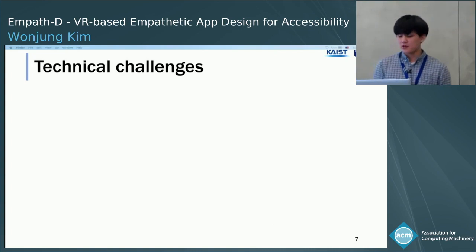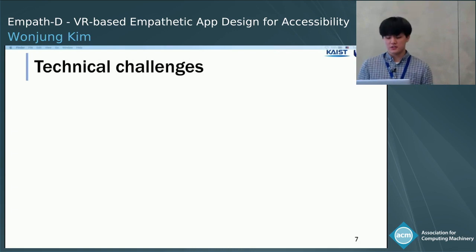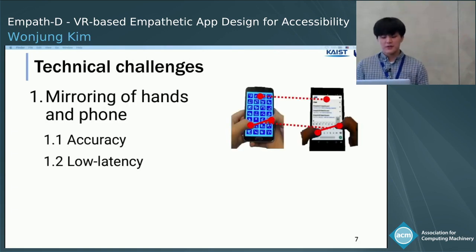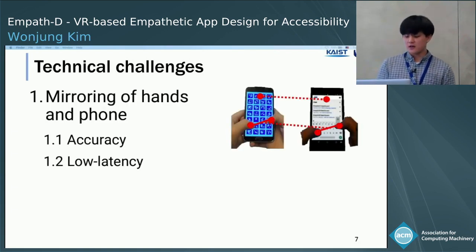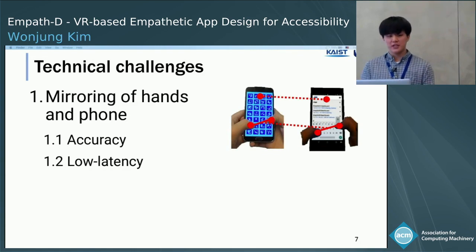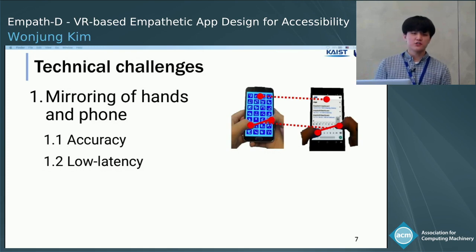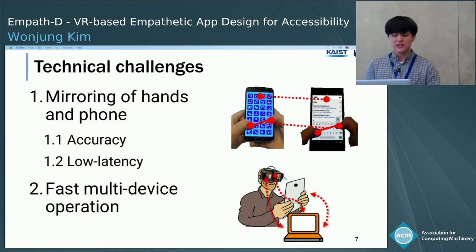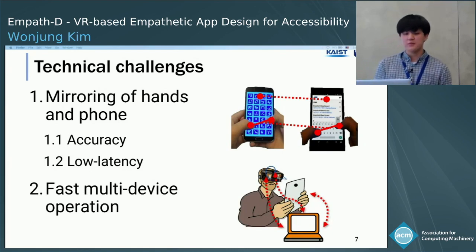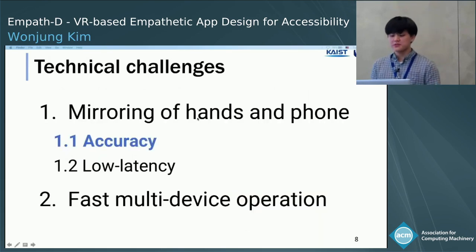In developing the system, we had to address technical challenges to synchronize the real world and the virtual world. Mirroring hands and phone to VR needs to be fast and accurate; otherwise, visual and tactile perceptions of the touch interaction will be inconsistent and users could not touch where they're supposed to. Second, fast multi-device operation: the virtual phone, physical phone, and the emulator should operate as if they were a single smartphone. Let's move on to the first one, accurate mirroring of hands and phone.